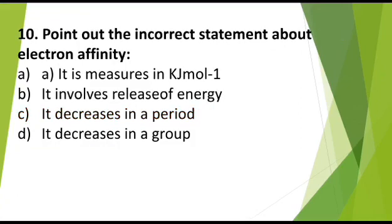MCQ number 10. Point out the incorrect statement about electron affinity: a) It is measured in kilojoule per mole, b) It involves release of energy, c) It decreases in a period, d) It decreases in a group. Correct answer is it decreases in a period.